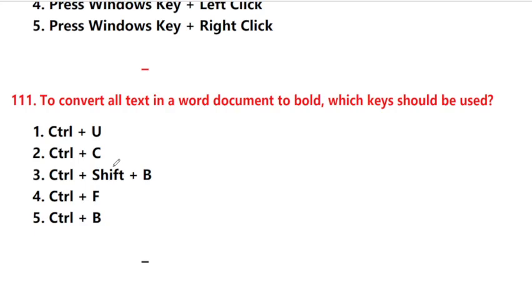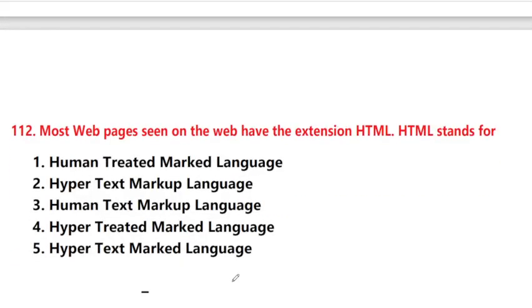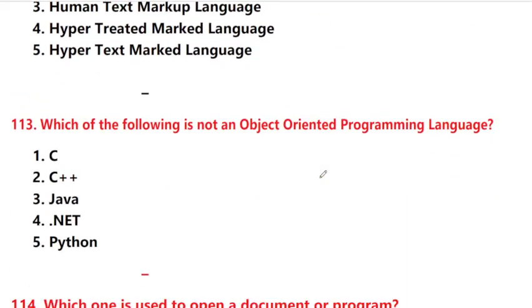Answer is option 5: Ctrl + B. Next: most web pages seen on the web have the extension HTML. HTML stands for — option 2: Hypertext Markup Language.